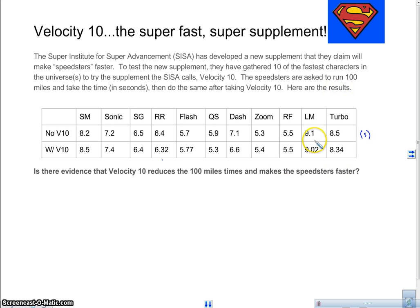I'm not sure Lightning McQueen can do 100 miles in 9.1 seconds, but that would be pretty cool. And then with Velocity 10 in seconds. So is there evidence that the Velocity 10 in fact reduces their 100 mile times and makes the speedsters faster? Well, what we're doing here, you see that we have two samples here, right? They took it once with the Velocity 10 and then they did it again without the Velocity 10 and then again with the Velocity 10.